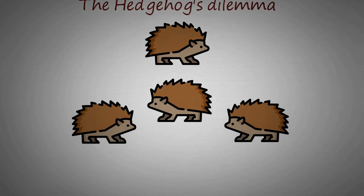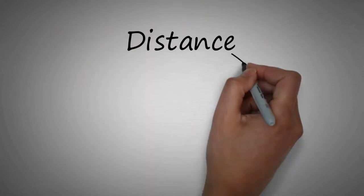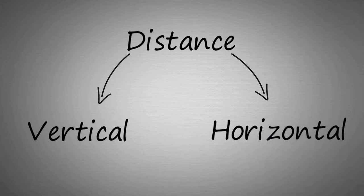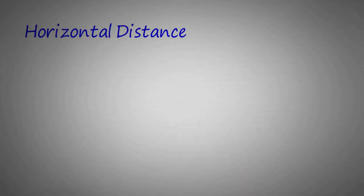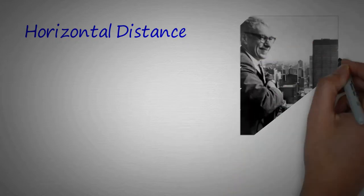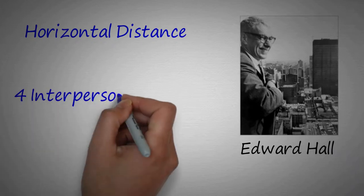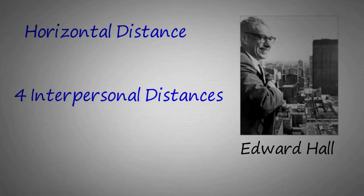How about humans? There are two types of distance that we need to bear in mind. As the hedgehogs do, we should figure out the horizontal distance in some relationships. Anthropologist Edward Hall suggested that there are four interpersonal distances of humans.